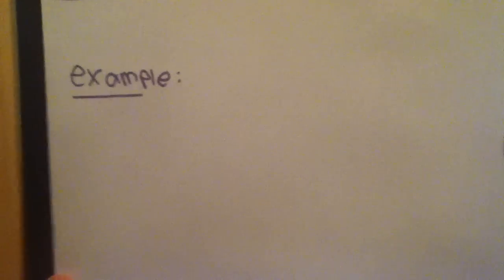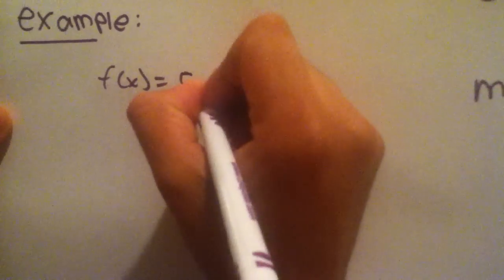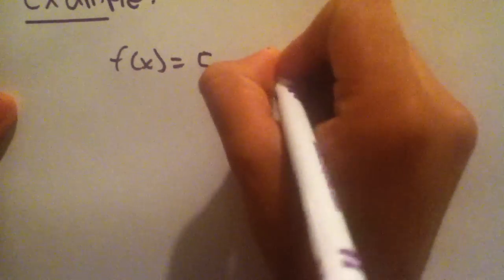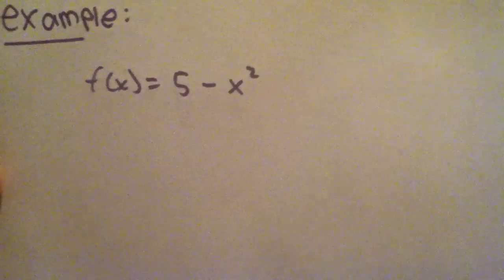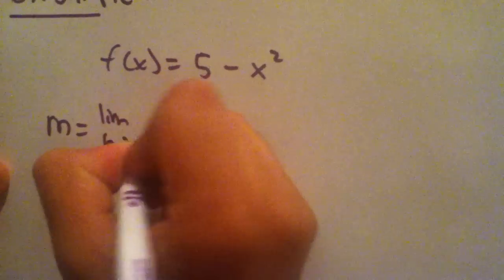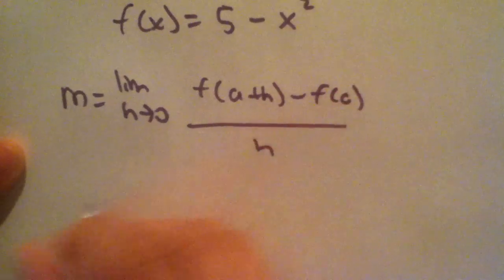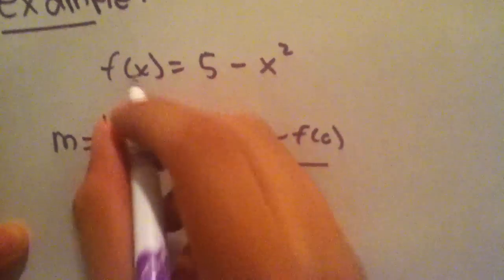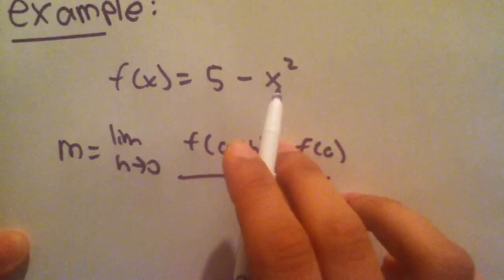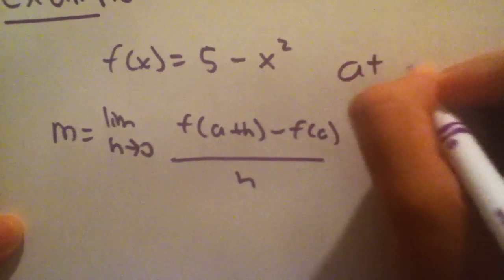Let's do an example. The function f of x is equal to 5 minus x squared. The formula is m equals the limit as h approaches 0 of f of a plus h minus f of a over h. Let's find the slope of this function at x equal to 2.